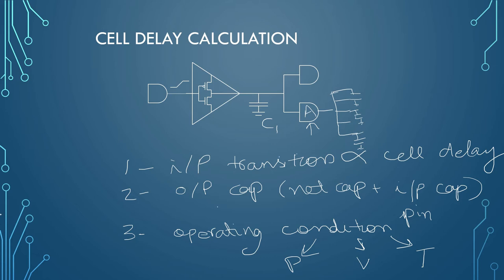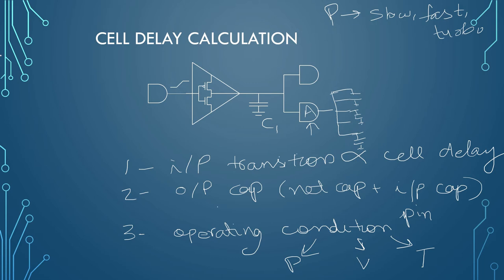The third part is operating condition — PVT. P for process means there are different kinds of manufacturing processes. The process nature could be slow, fast, or ultra-fast, also called turbo. Because of these, cell delay gets affected. In slow process, cell delay will be more. In turbo, cell delay will be nominal or less.